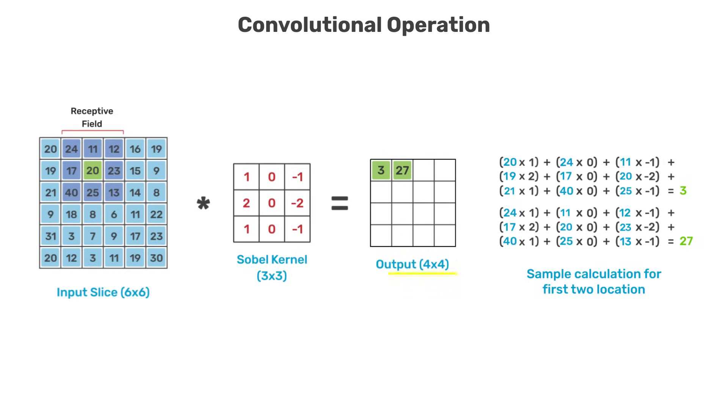Notice that the output from the convolution operation has a smaller spatial size than the input slice. This has to do with how the filter is placed over the input data so that it does not extend beyond the boundary of the input.